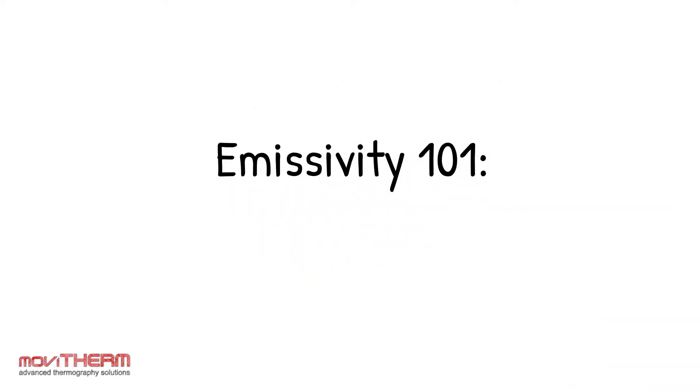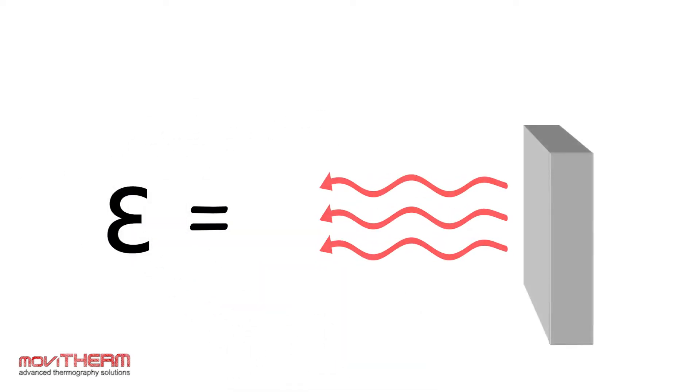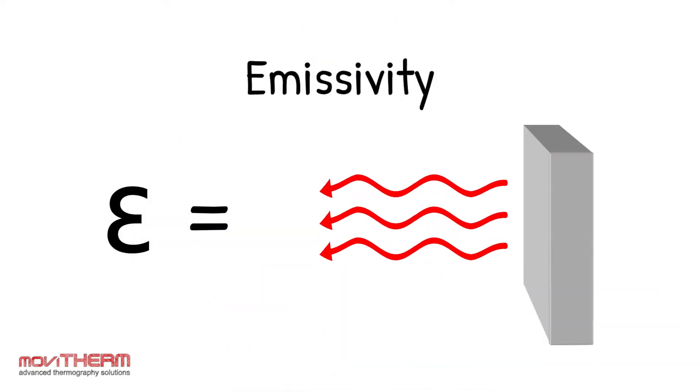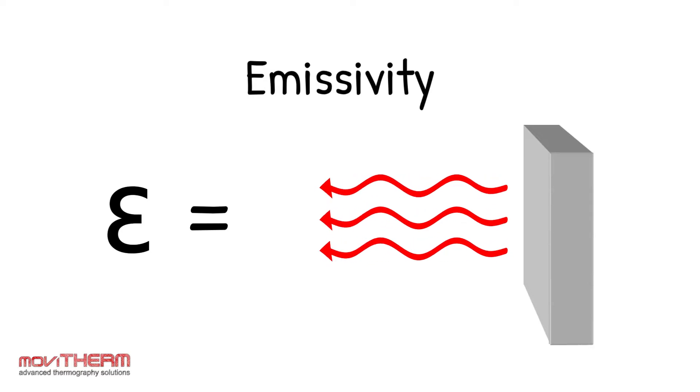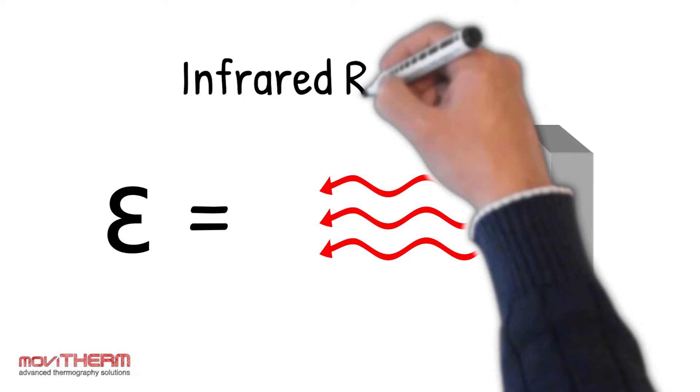Emissivity 101. What is emissivity? An essential property in the field of infrared theory is emissivity. In basic terms, emissivity describes how well an object emits infrared radiation.